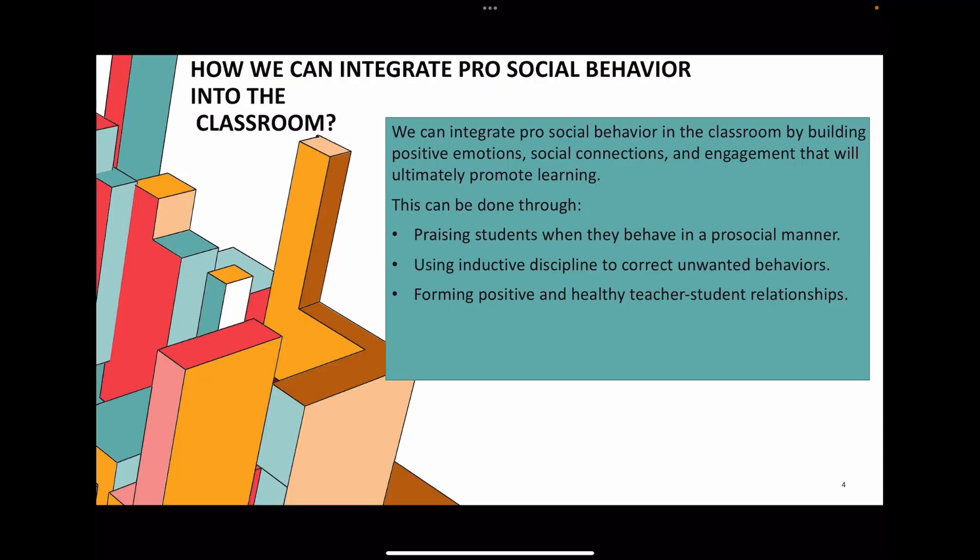So how can we integrate pro-social behavior into the classroom? We can integrate this behavior by building positive emotions, social connections, and engagement that will ultimately promote learning. This can be done through praising students when they behave in a pro-social manner, using inductive discipline to correct unwanted behaviors rather than punishment-based discipline, and forming positive and healthy teacher-student relationships.